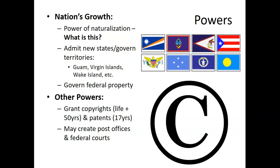Congress also has powers to grant copyrights and patents, and can create federal courts and post offices. A copyright lasts the life of the person plus 50 years after their death. Patents last 17 years before someone can start reproducing that product or invention.